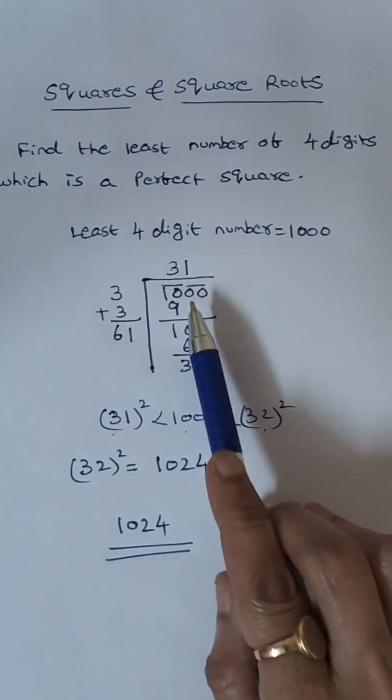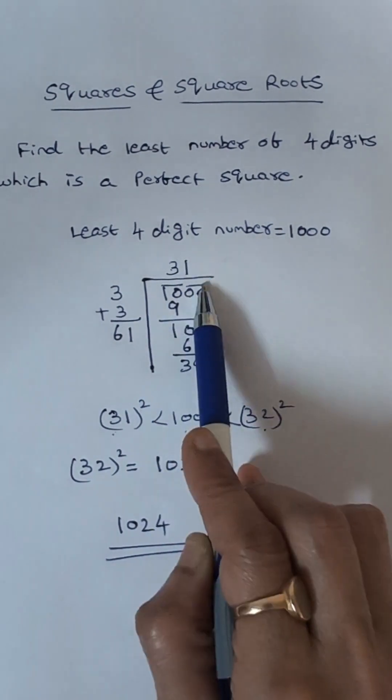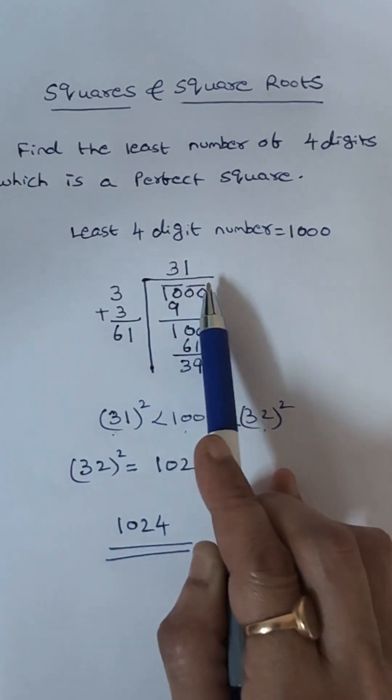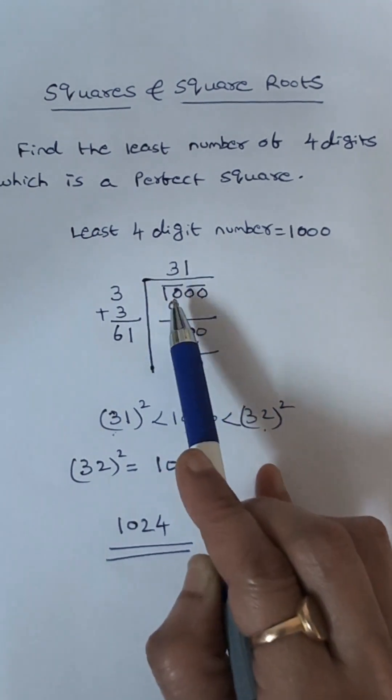Now we have to use division method for solving this. So first, write 1000 starting from right. Divide the digits into groups of 2. Pairing karna hai. So these two 0s, these two 0s. Now 10.